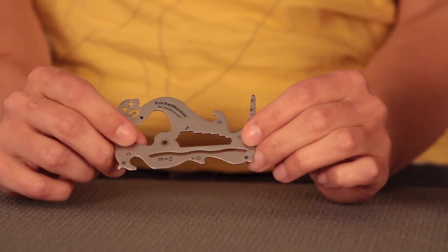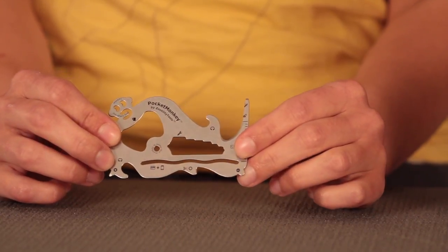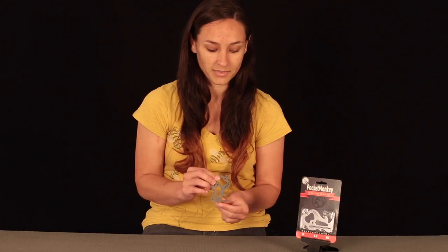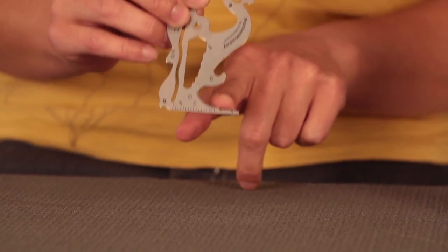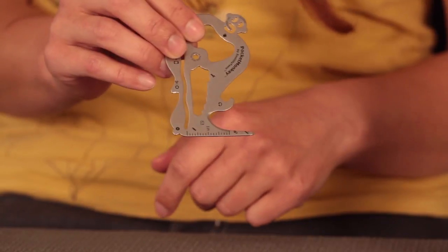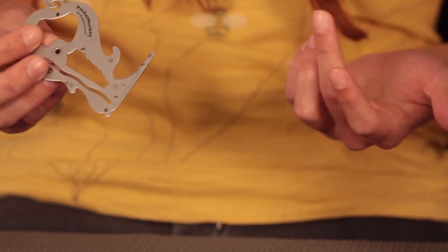In the middle here you have six sizes of standard hex wrenches. Turn it this way, you'll see it kind of dips in here. It's a really great letter opener for when you get your birthday card from your grandmother.